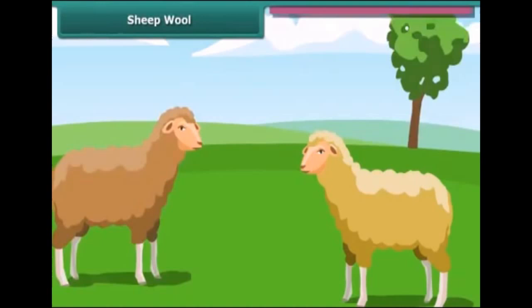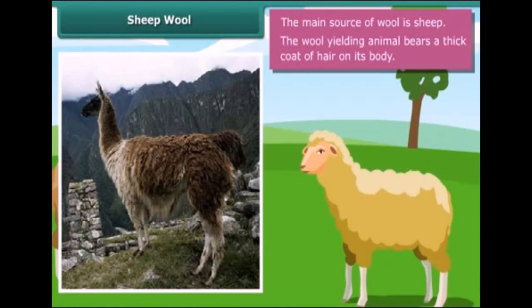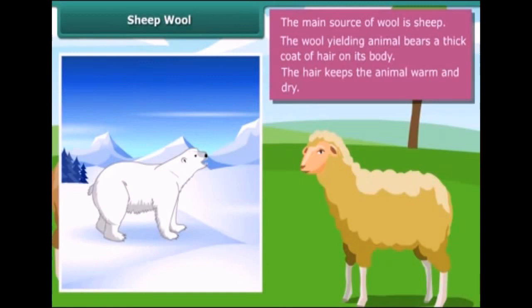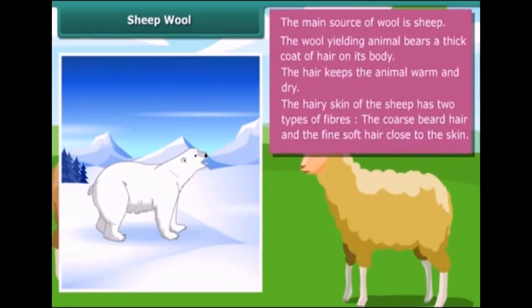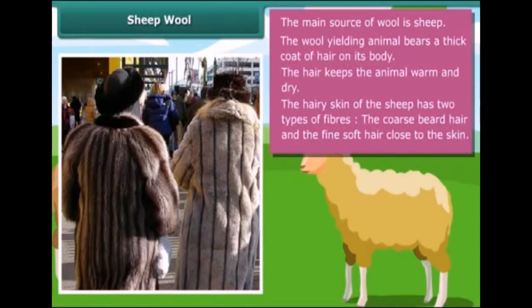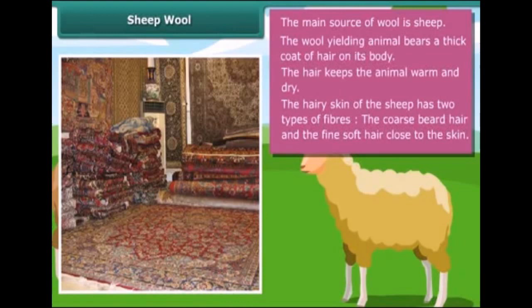The main source of wool is sheep. The wool-yielding animal bears a thick coat of hair on its body. The hair traps air — and since air is a poor conductor of heat, the hair keeps the animal warm and dry, allowing it to live in cold and harsh climates. The hairy skin of the sheep has two types of fibers: coarse beard hair and fine soft hair close to the skin. The fine hair provides fibers for making woolen clothes, and coarse hair provides wool for making carpets.